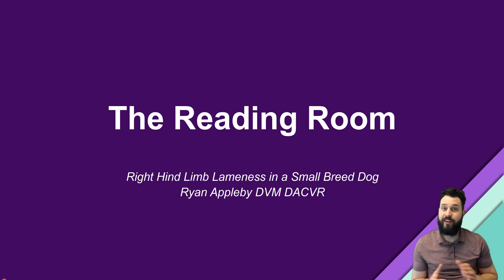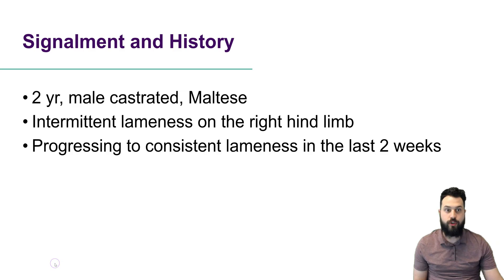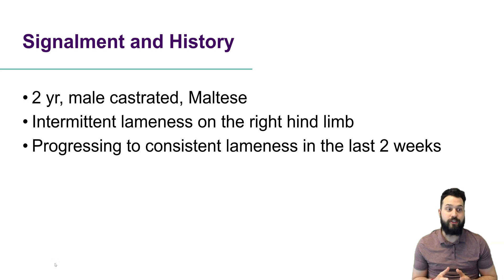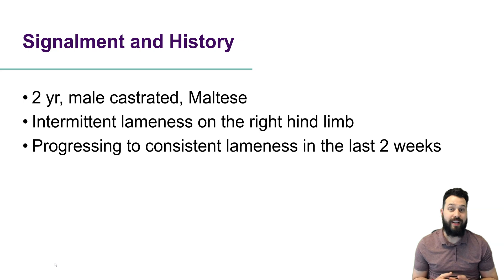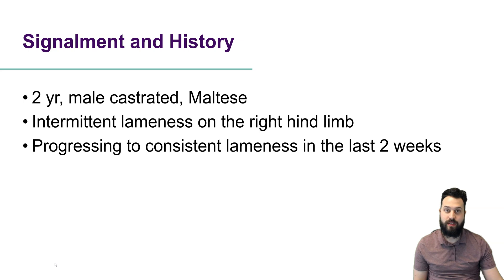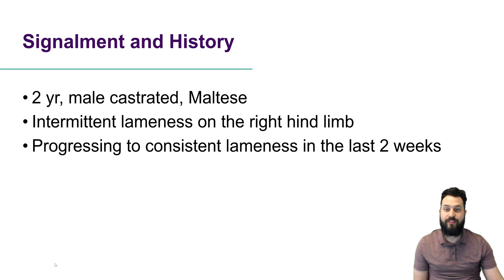Hey folks, Ryan here and welcome back to the reading room. This week we're going to take a look at a patient presenting for right hind limb lameness. Our patient is a two-year-old male castrated Maltese dog presenting for an intermittent lameness on the right hind limb, which has progressed to be a more consistent lameness in the last two weeks. Our exam localized the lameness to the stifle, so we took radiographs of that region.